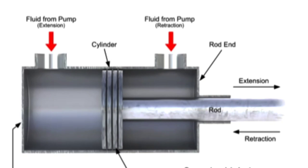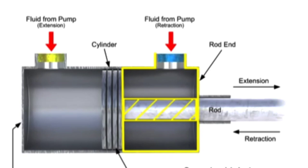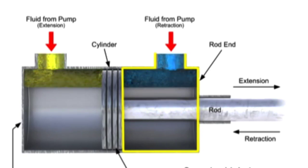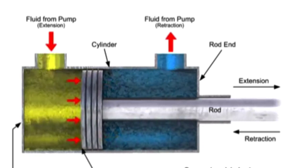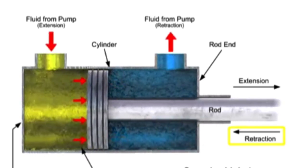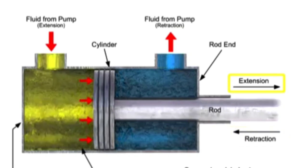Let's assume that the volumetric flow rate is equal for each inlet. Because the rod takes up space within the cylinder, less fluid is required to fill that side. This means that the fluid can fill the rod end side more quickly than it can fill the blind end. Since the rod end side fills with fluid more quickly, the cylinder will always retract faster than it can extend.